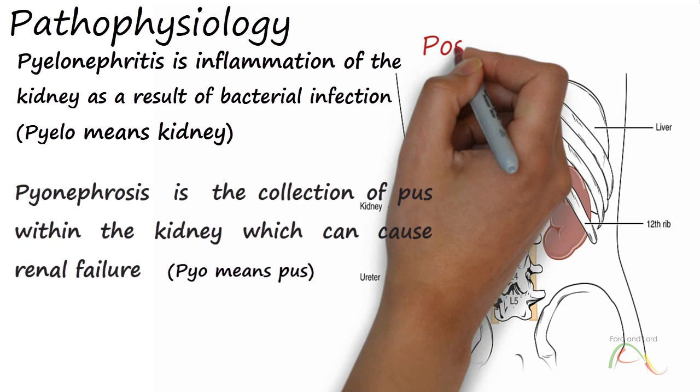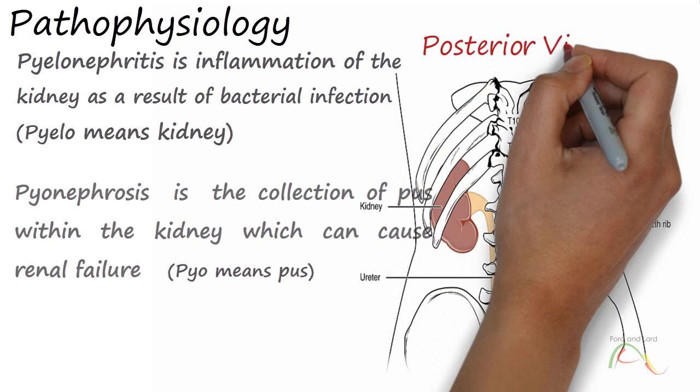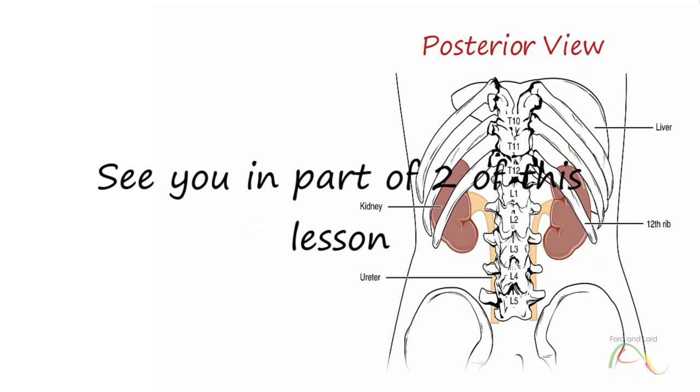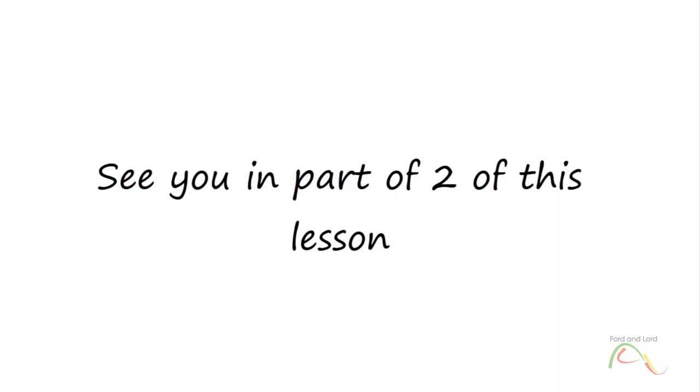When the stone obstructs an area of the ureter, pressure builds up in the urinary tract wall. This stimulates the production of prostaglandins, which dilates the ureteric lumen to help pass down the stone and increases the pressure within the kidney, which leads to diuresis.